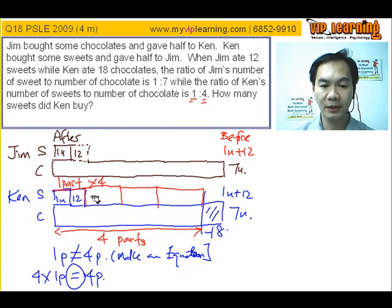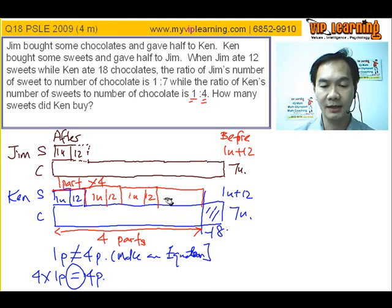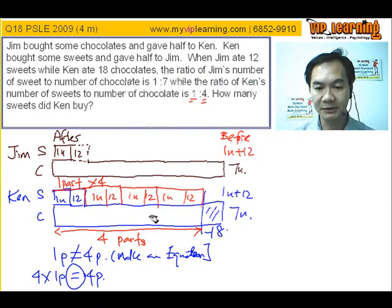One, two, three, four. Meaning, we are going to have one u plus twelve here. One u plus twelve here. Now, we are going to put it in the numbers, in the equation, and see what happens.